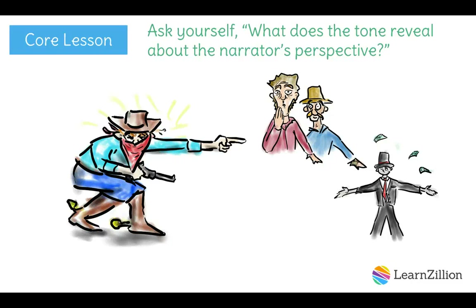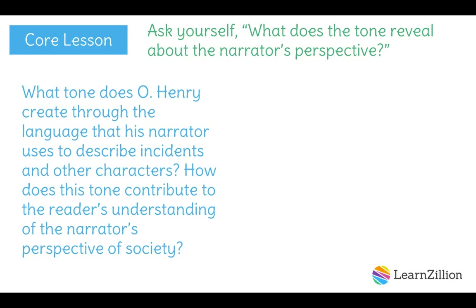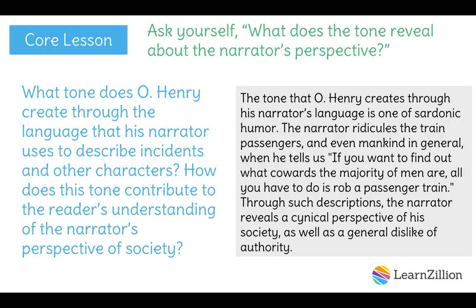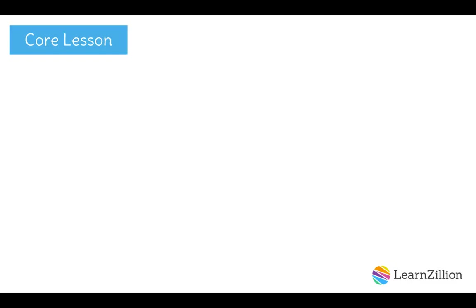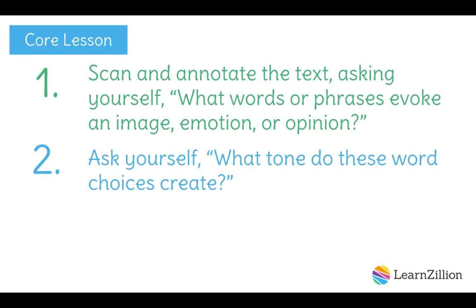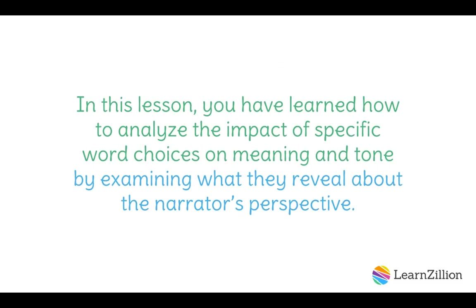Now that we've done some good thinking about the text, the last step is to write that thinking down. You can pause the video to read the full answer and then hit play to continue. To summarize, today we've explored how O. Henry uses language to create a tone that impacts our understanding of his narrator's perspective, using three steps: 1) Scan and annotate the text, asking what words or phrases evoke an image, emotion, or opinion. 2) Ask yourself what tone do these word choices create. 3) Ask yourself what does the tone reveal about the narrator's perspective. In this lesson, you have learned how to analyze the impact of specific word choices on meaning and tone by examining what they reveal about the narrator's perspective.